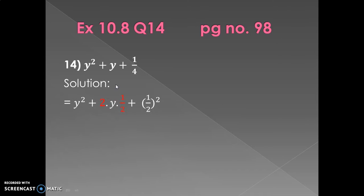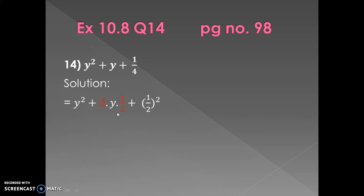What I have done in the first step is I introduced a 2 — I multiplied the middle term by 2 and by 1/2. So this 2 and 1/2 cancel each other, meaning I have not added anything to the middle term. By writing it in this form I have made it match the formula a² + 2ab + b² which we are going to use.